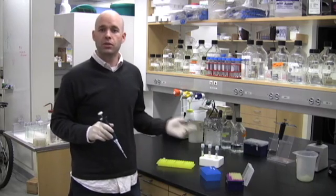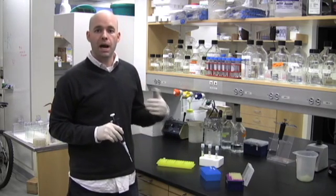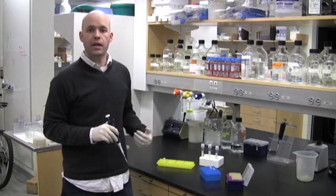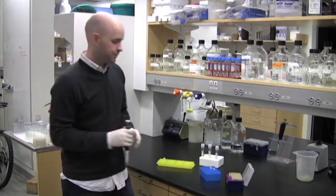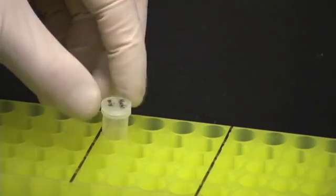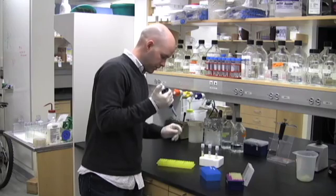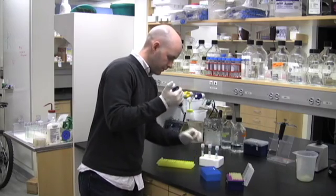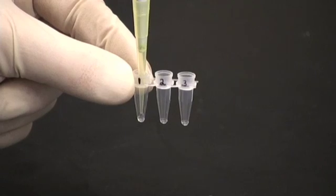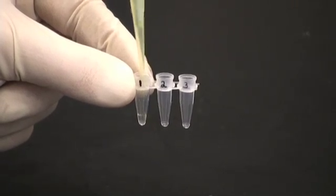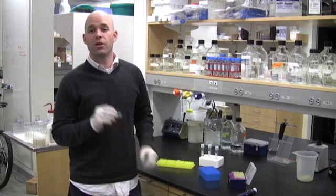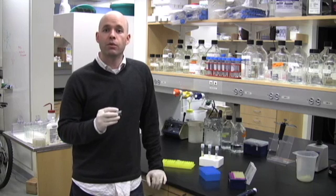All right, so after you eject your tip into the sterile culture tube, you want to go back now to the PCR tubes and add 20 microliters of your master mix. All right, so once you've added all of your master mix to each of the tubes, you're ready for PCR.